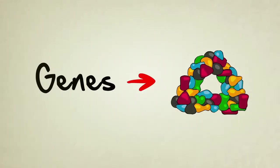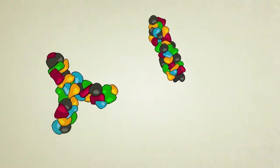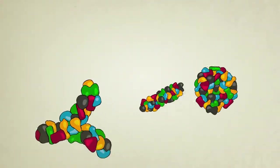Genes make proteins. Those proteins interact with each other and all sorts of chemicals inside the body to build things like eye pigments, freckles, and mood-altering hormones.